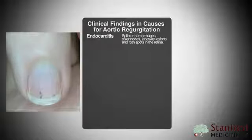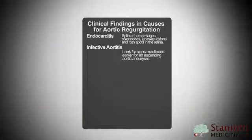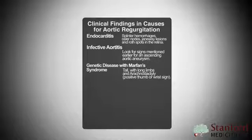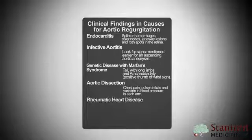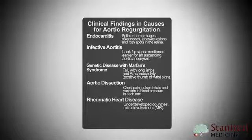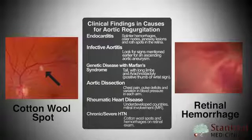Consider the causes of aortic regurgitation. Endocarditis — look for splinter hemorrhages, Osler nodes, Janeway lesions, and Roth spots on retinal exam. Syphilis can cause infective aortitis; look for signs of ascending aortic aneurysm. Genetic diseases such as Marfan syndrome — patients who are tall with long limbs, arachnodactyly, and a positive thumb or wrist sign. Aortic dissection — chest pain radiating to the back, pulse deficits, and blood pressure differences between arms. Rheumatic heart disease is more common in underdeveloped countries and often presents with mitral involvement, usually mitral regurgitation. Chronic severe hypertension — look for cotton wool spots or hemorrhages on retinal exam.